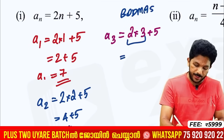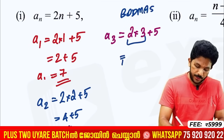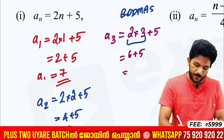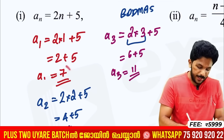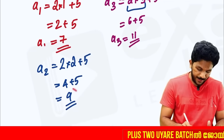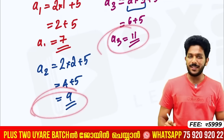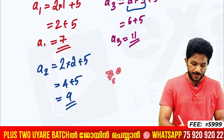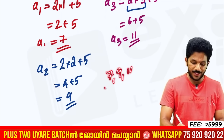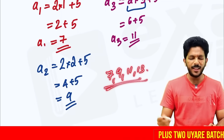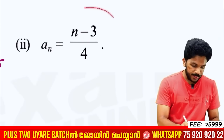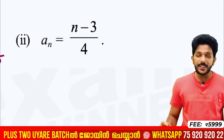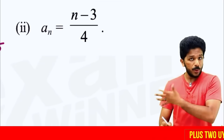2 into 3 is equal to 6. 6 plus 5 is equal to 11. So the three terms are: 7 is the first term, 9 is the second term, 11 is the third term. So 7, 9, 11 — these are the odd numbers starting from 7.